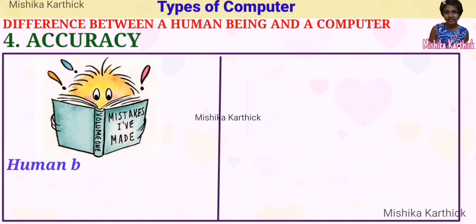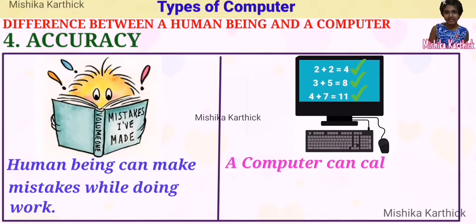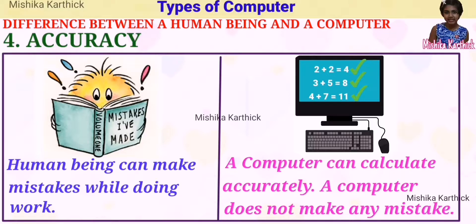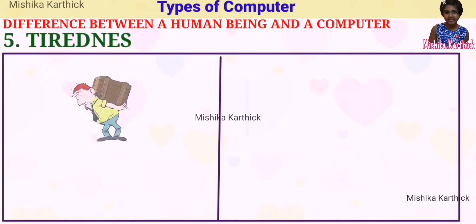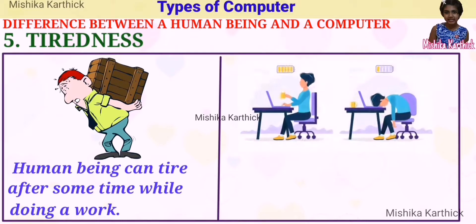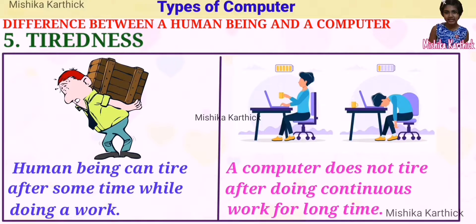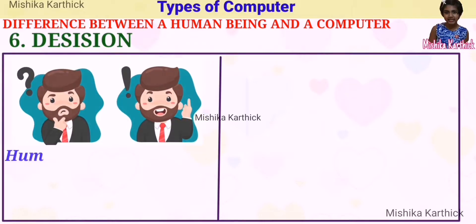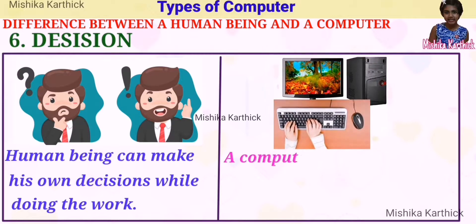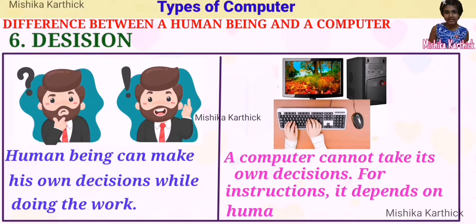Accuracy: a human being can make mistakes while doing work, but your computer can calculate accurately and does not make any mistake. Tiredness: a human being can tire after some time while doing work, but a computer does not tire after doing continuous work for a long time. Decision: a human being can make his own decisions while doing the work, but your computer cannot take its own decisions. For instructions, it depends on human beings.